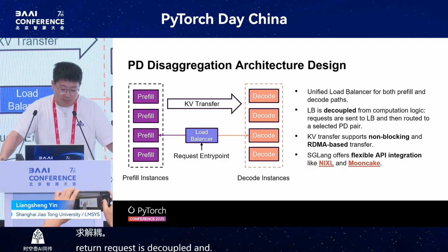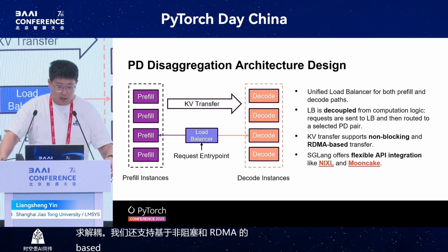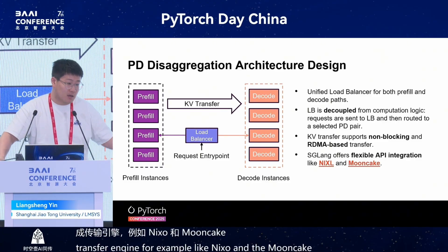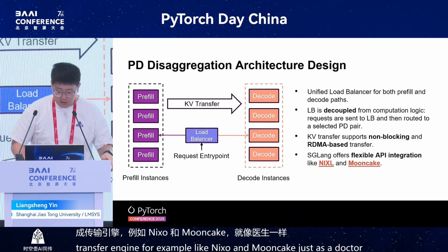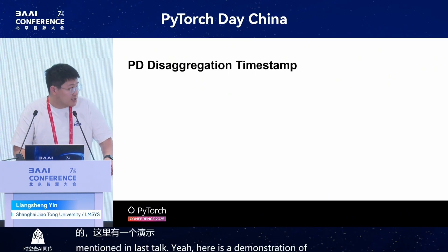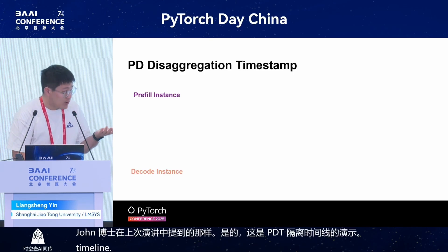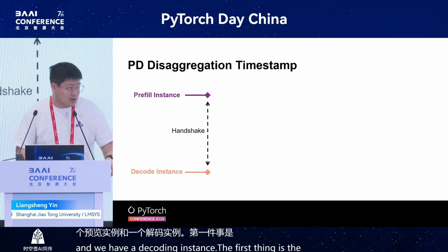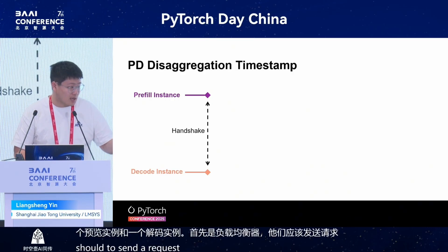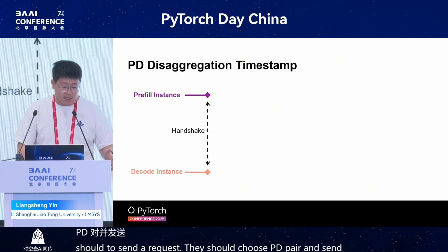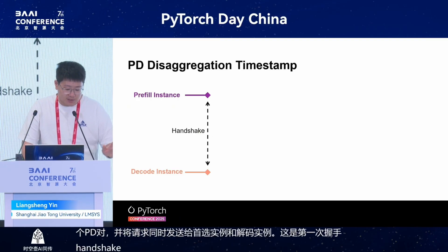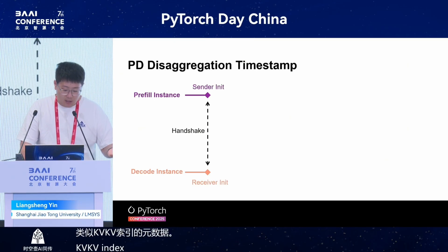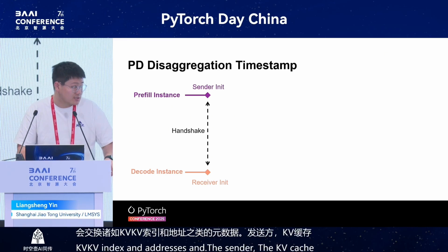We also support non-blocking and RDMA-based KV transfer, and we offer flexible API integration of the transfer engine — for example, Nixo and Mooncake, as mentioned in the previous talk. Here is a demonstration of the PD disaggregation timeline. We have a prefill instance and a decode instance. The load balancer selects a PD pair and sends the request to both. The first step is a handshake process, which exchanges metadata such as the KV index, and initializes the KV cache sender and receiver.